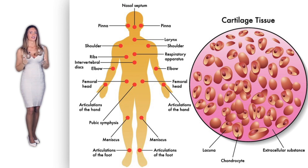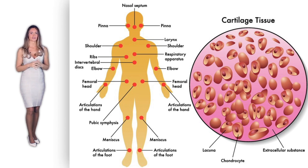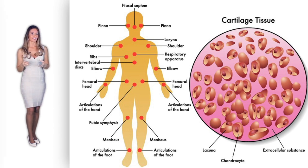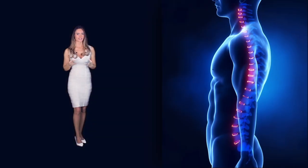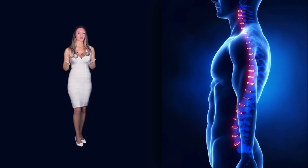Elastic cartilage is found in the inner ear and the epiglottis. Fibrocartilage contains both type 1 and type 2 collagen. The fibrous tissue provides its tough nature, while the collagen also gives it elasticity. A good example of fibrocartilage is the intervertebral disc in the vertebral column. It also protects the knee and forms the expandable pubic symphysis, in addition to the temporomandibular joint.